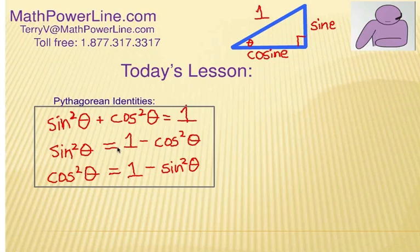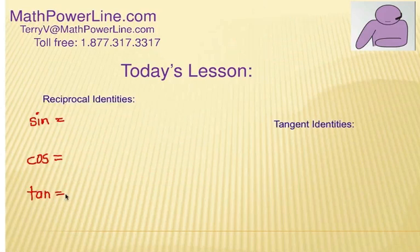Let's do some reciprocal identities. These reciprocal identities are writing one function as a reciprocal of another. And these are the main three trig functions, sine, cosine, and tangent. But there's other three here.